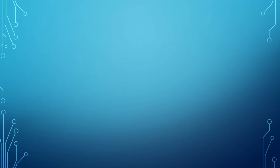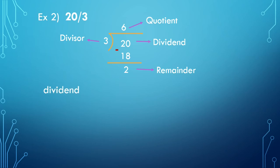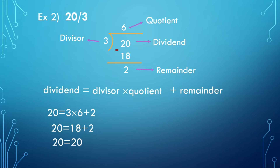Let us take one more example: 20 by 3. In this division, we got remainder as 2 and quotient as 6. But is this answer correct? To check the answer, we write: Dividend = Divisor × Quotient + Remainder. That is, 20 = 3 × 6 + 2. Here, 20 is our dividend, 3 is divisor, 6 is quotient, and 2 is remainder. So 20 = 18 + 2, that is 20 = 20. Our answer is correct.